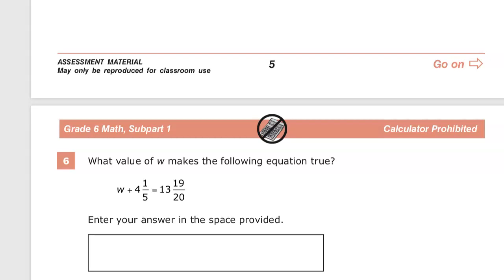This is the grade 6 math practice test for TN, ready? Question number 6 on this version. What value of W makes the following equation true? W plus 4 and 1/5 is equal to 13 and 19/20.